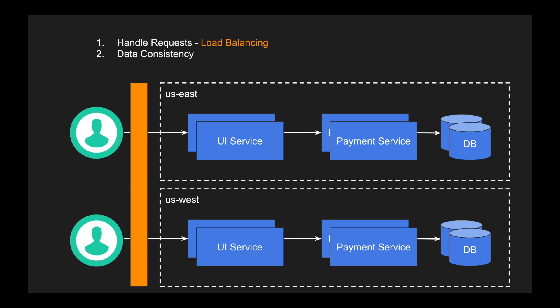The next challenge is data consistency. We will have to replicate our data from one database to another — that is the only way. The moment you process something in US East it needs to be replicated to all other databases, whether in the same region or outside. Replications within the same region, like our local high availability configurations, will have very low latency and update very quickly. However, cross-region replications will take a while because there is network latency between data centers that may be thousands of kilometers apart.